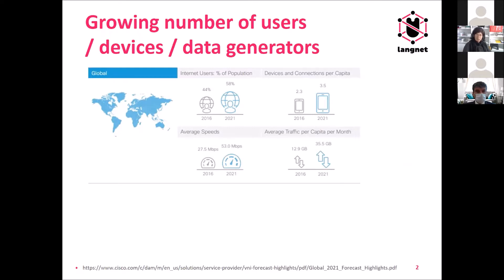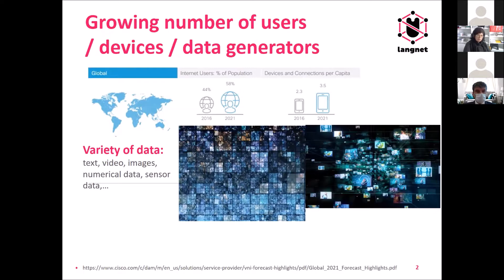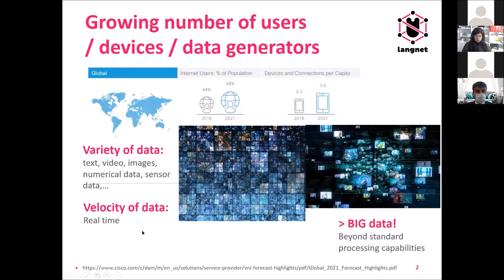With all these different kinds of data generators, we produce different kinds of data: it can be text, video, images, numerical data, sensor data, and so on. We generate huge quantities of data that are really different in nature for analysis. Because of these huge quantities, the velocity at which new data is generated is also huge, requiring real-time processing capacity — which leads us to the key term: big data, meaning data to be processed beyond standard processing capabilities.